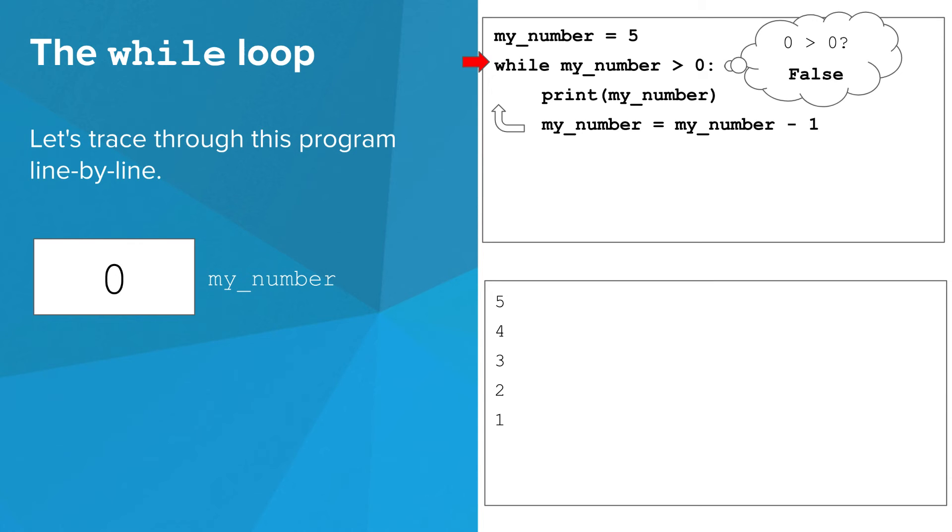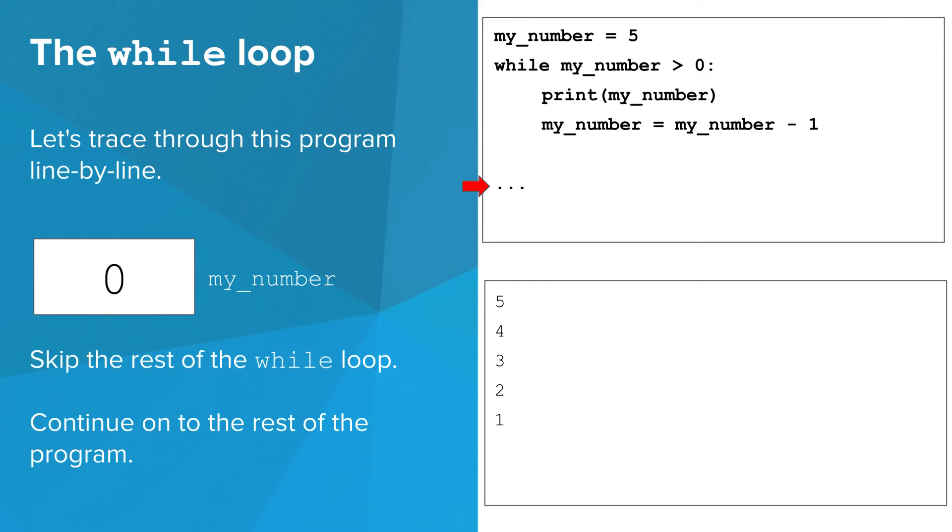Back to the top. Now, 0 is not greater than 0, so the condition is false. Once the condition becomes false, the Python interpreter skips over the rest of the while loop and continues on to the rest of the program.